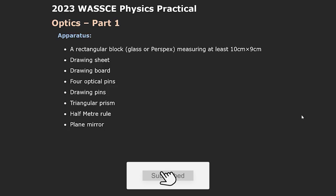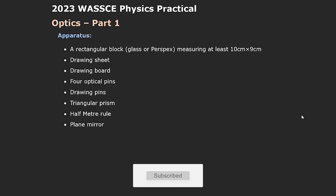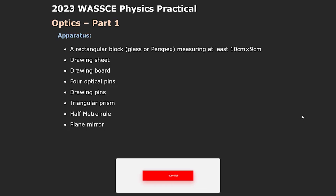Let's start off with the apparatus that schools were asked to provide. You'll be expected to see a rectangular block prism whose size is at least 10cm by 9cm. You'll also see a drawing sheet, drawing board, four optical pins, four drawing pins, triangular prism, half-meter rule, and a plane mirror.